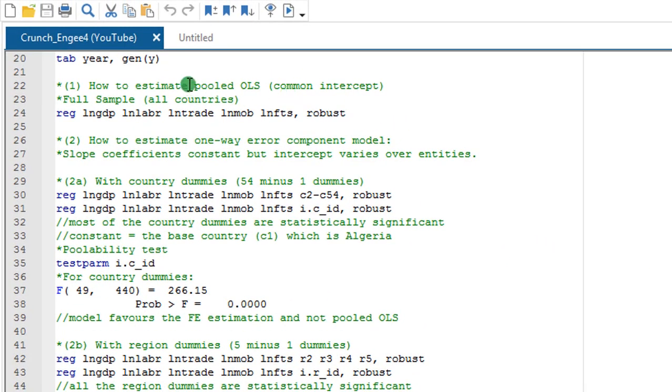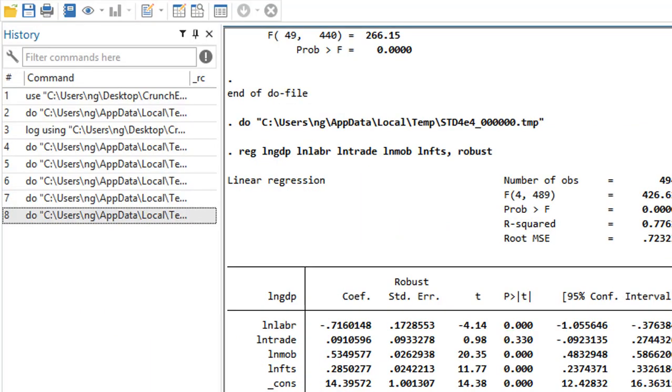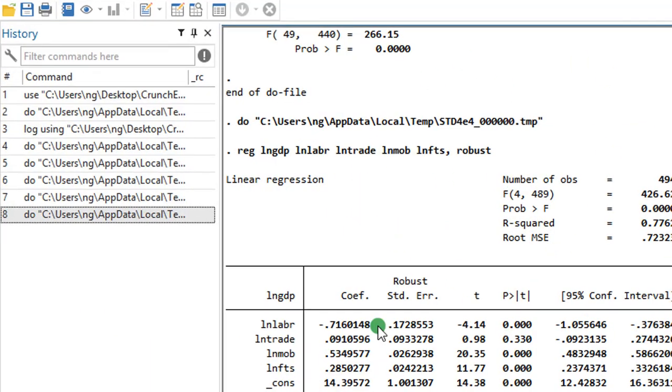Let's start by estimating the model with a common intercept called the pooled OLS. I have here the variables GDP, labor, trade, mobile subscription, and fixed telephone. All of them in their log form. I'm going to highlight this and execute the common intercept model. So here's the result for the common intercept model.